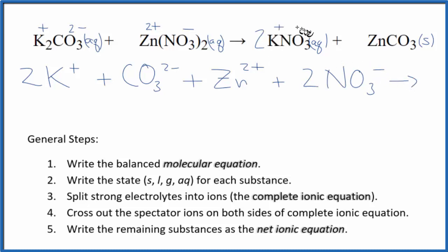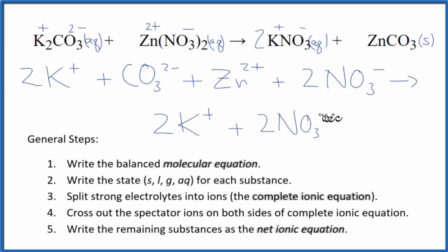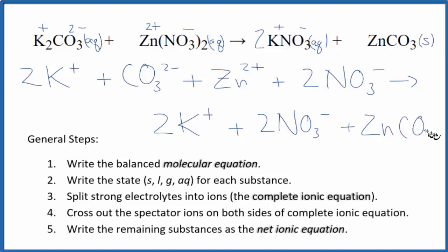Those are the reactants. The products will have two potassium ions plus two nitrate ions. For the zinc carbonate, because that's a solid, we're not going to split that apart. That'll just be zinc carbonate, ZnCO₃. This is the complete or total ionic equation.